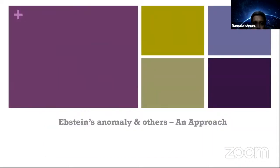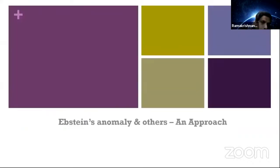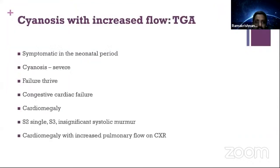Coming to Epstein's anomaly: it has typical features and bimodal presentation — a whole chapter by itself. It classically presents as neonatal Epstein's and then again around the second or third decade with symptoms.